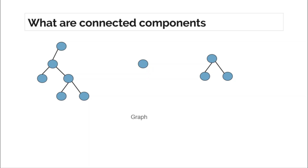First of all, it is important to know what connected components are. Suppose this is a graph — there are three connected components. A connected component is a set of vertices such that if you choose any two nodes from that set, there exists a path between those two nodes. For example, this forms a single connected component because if you choose any two nodes, there exists a path between them.